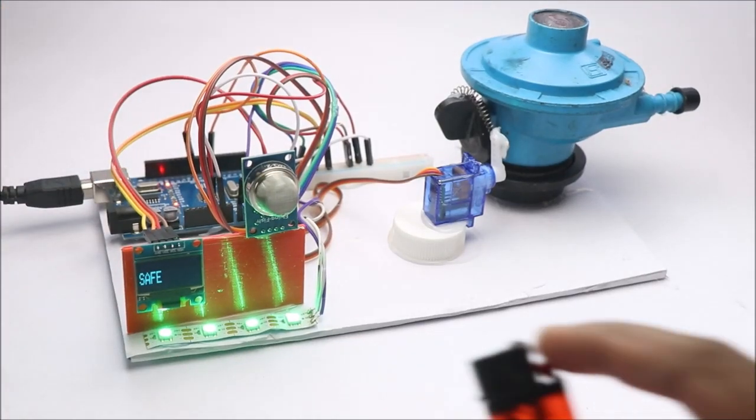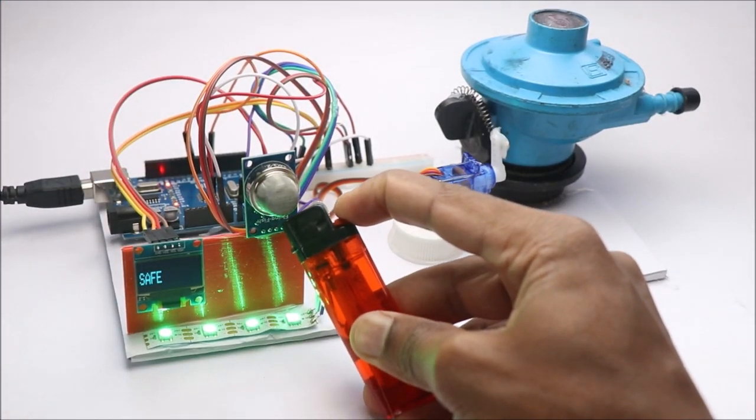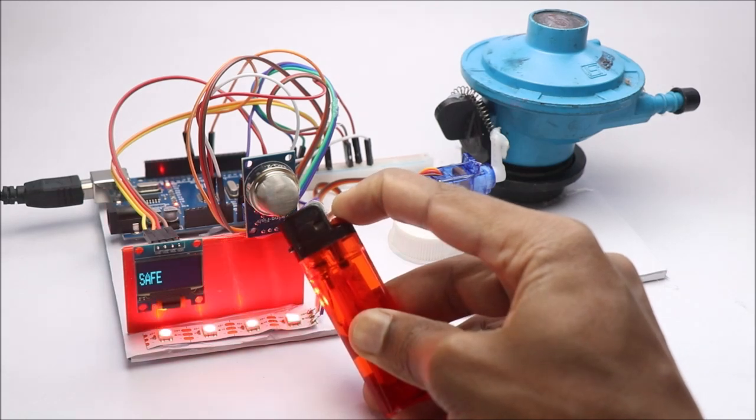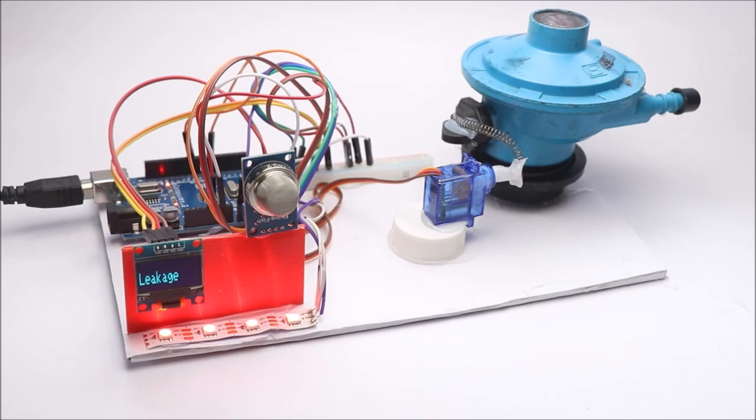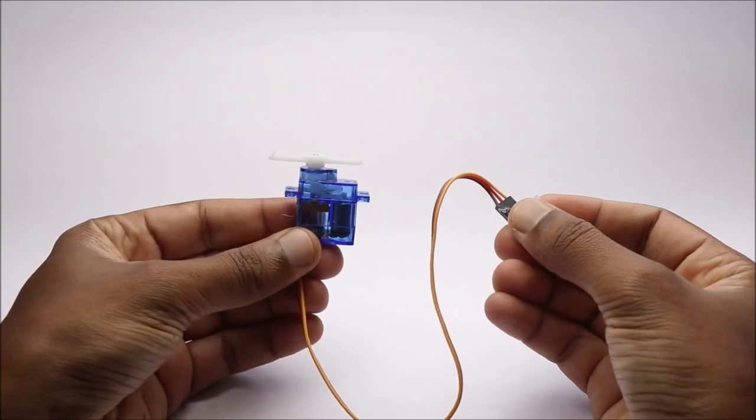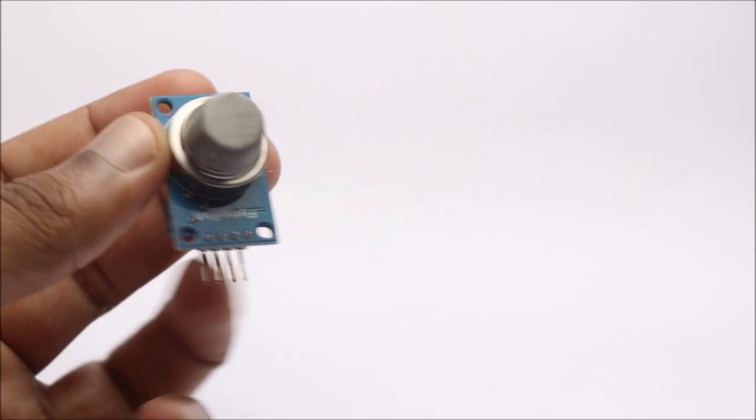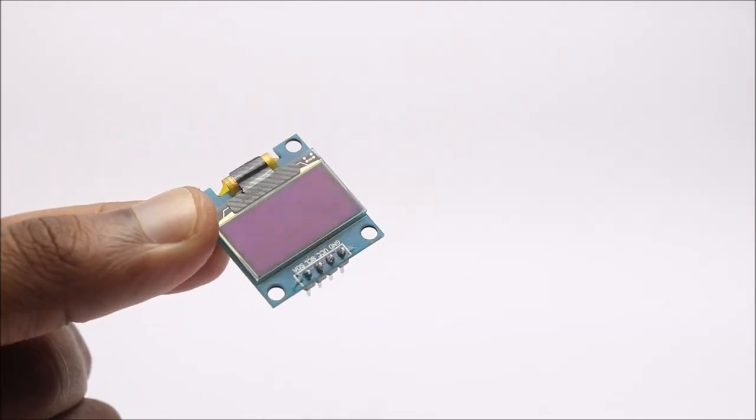Hey guys, in this video I'll show you how to make a gas leakage detector with auto regulator cutoff system along with display using Arduino. To build this project you need Arduino Uno, micro servo, gas sensor, OLED module, sheet of board, power rails from breadboard...